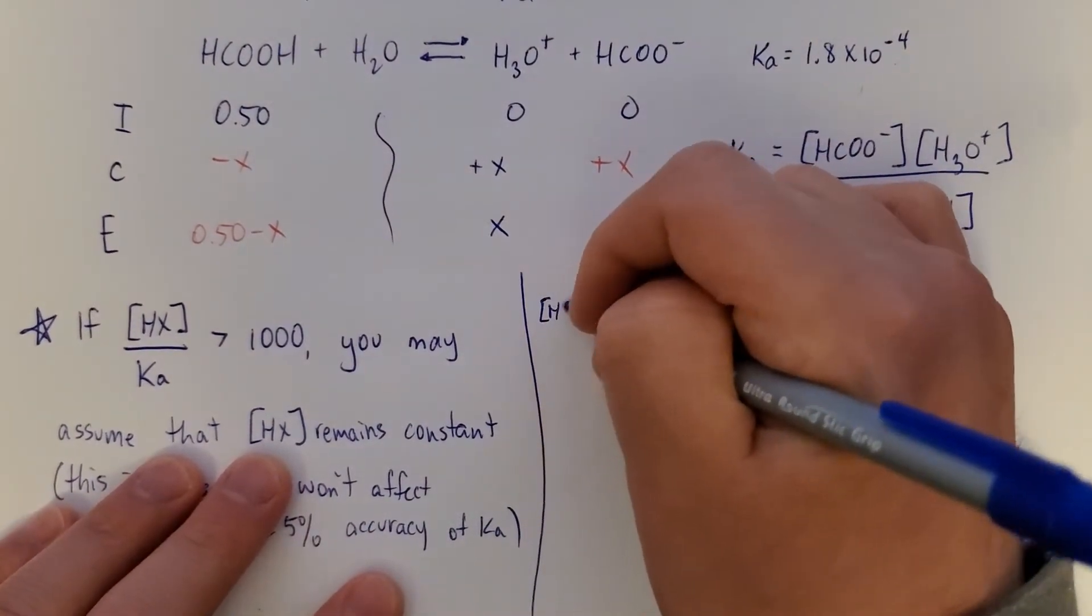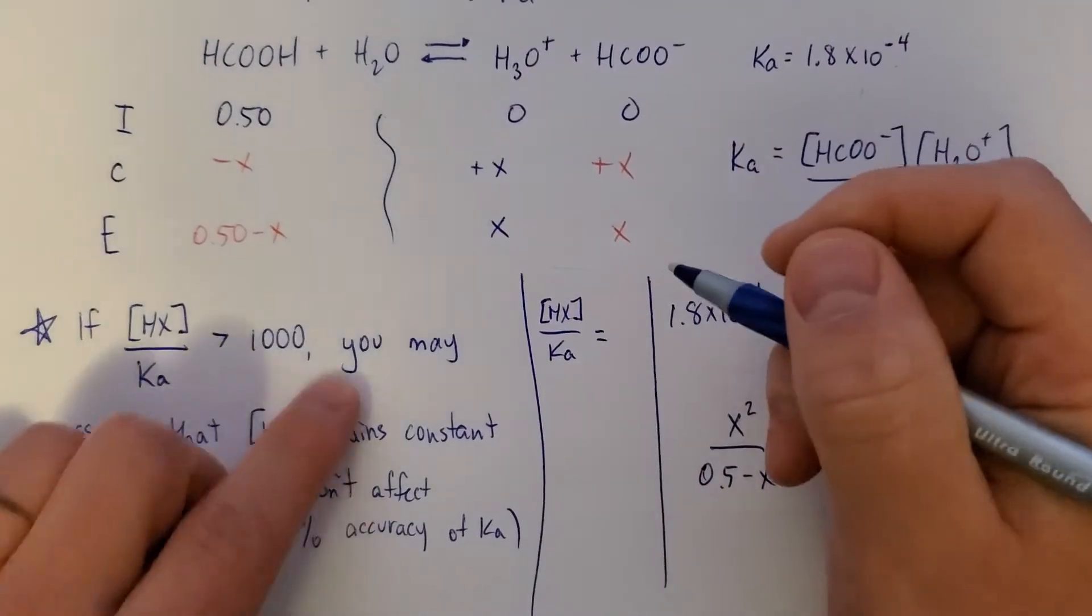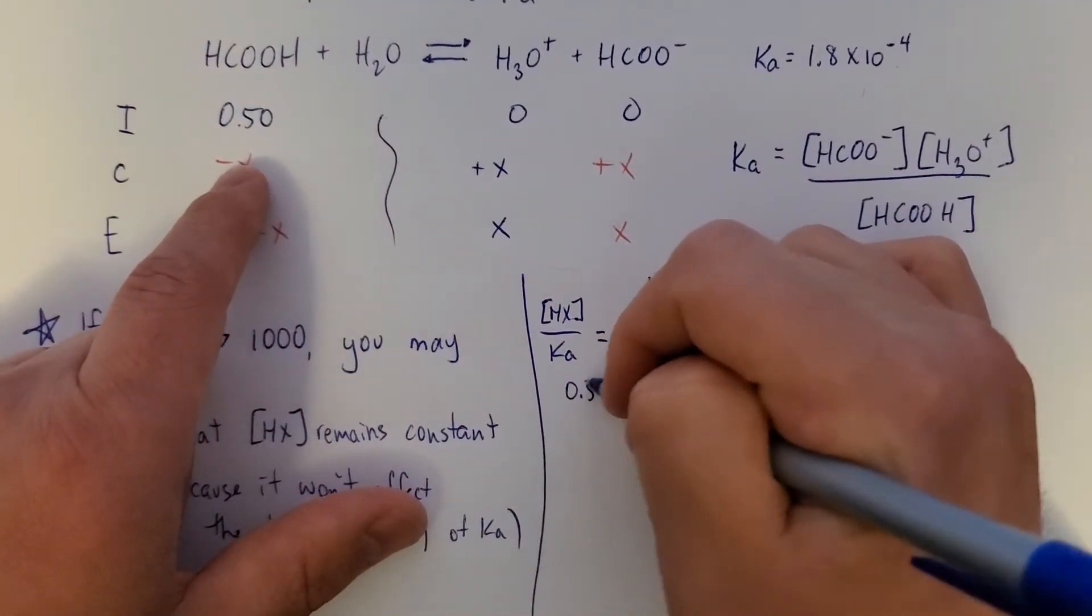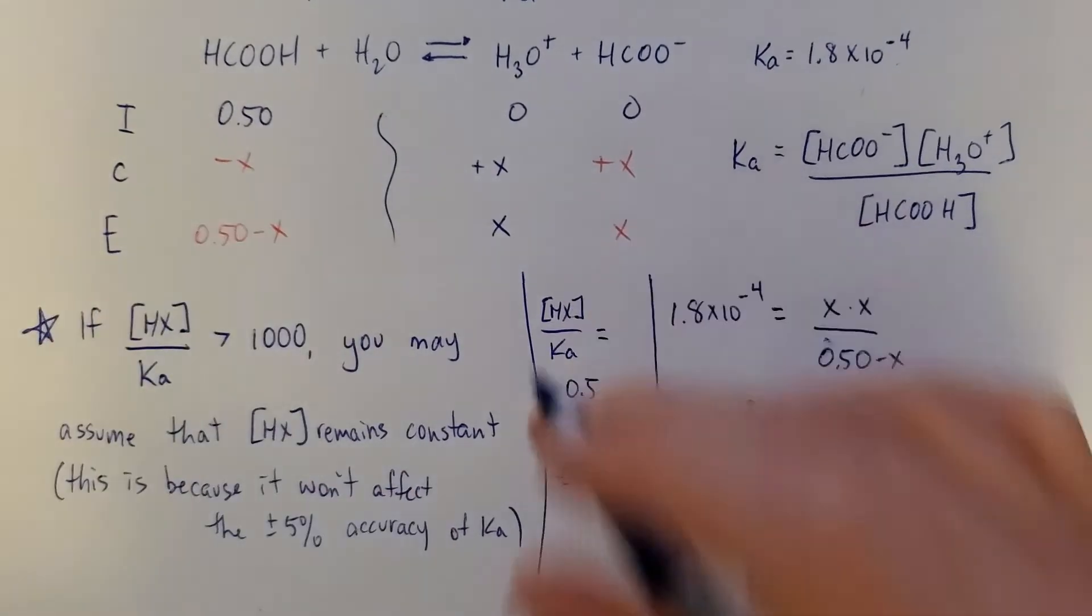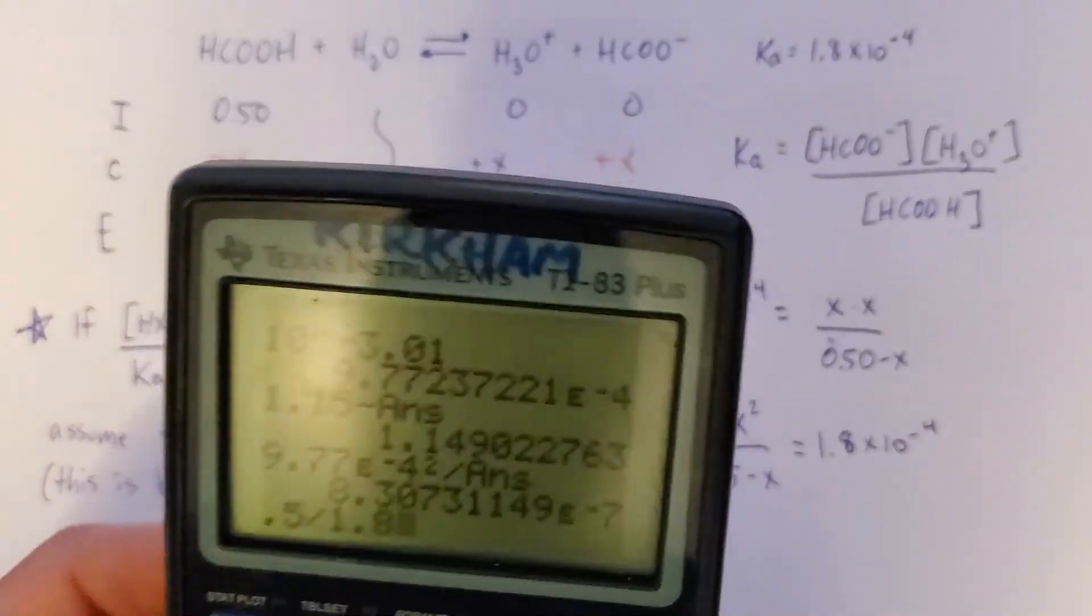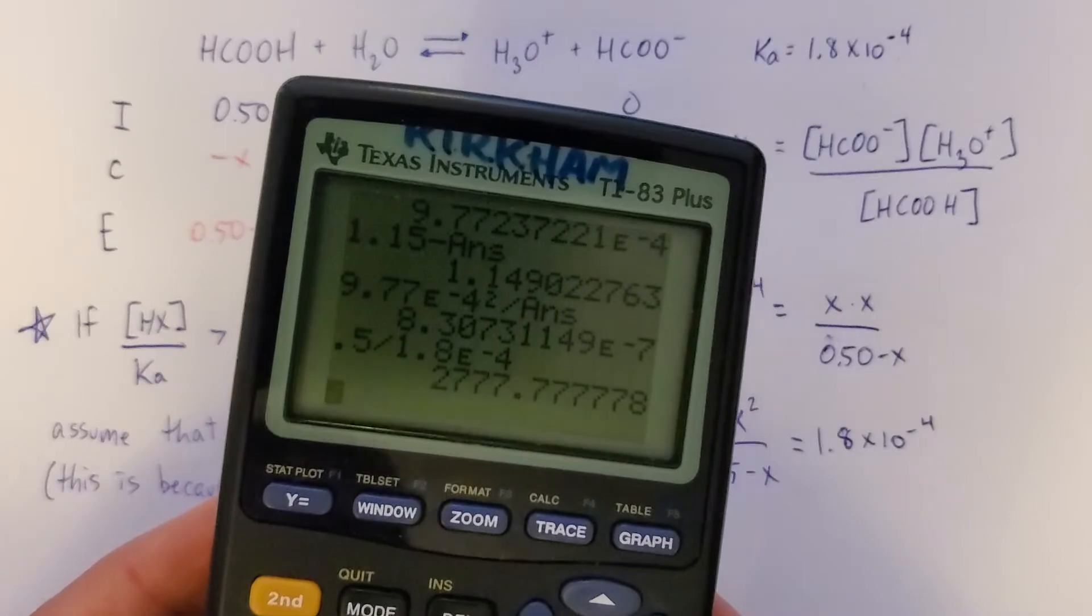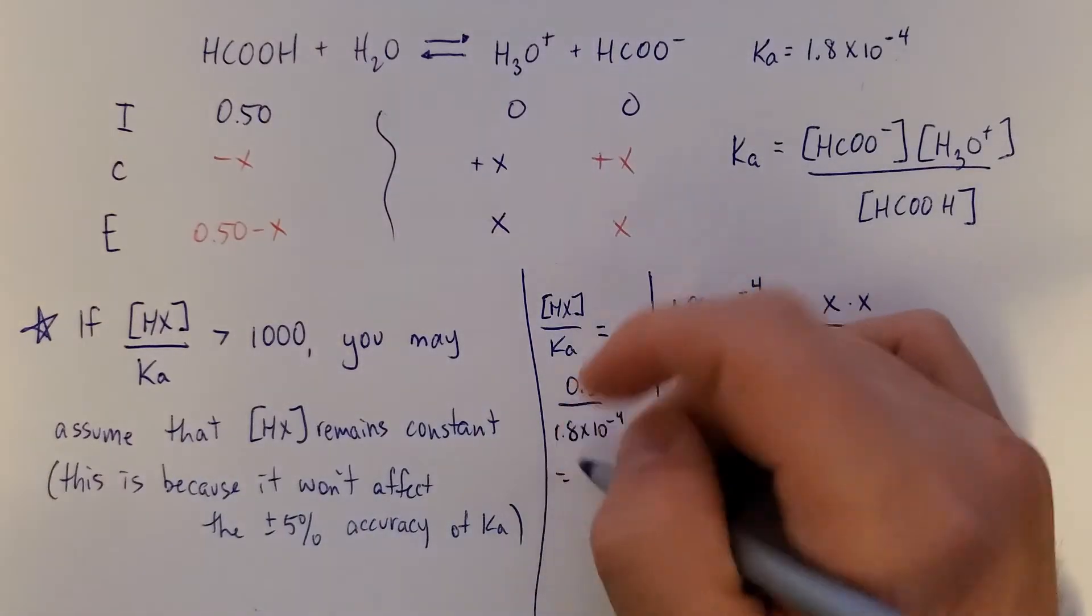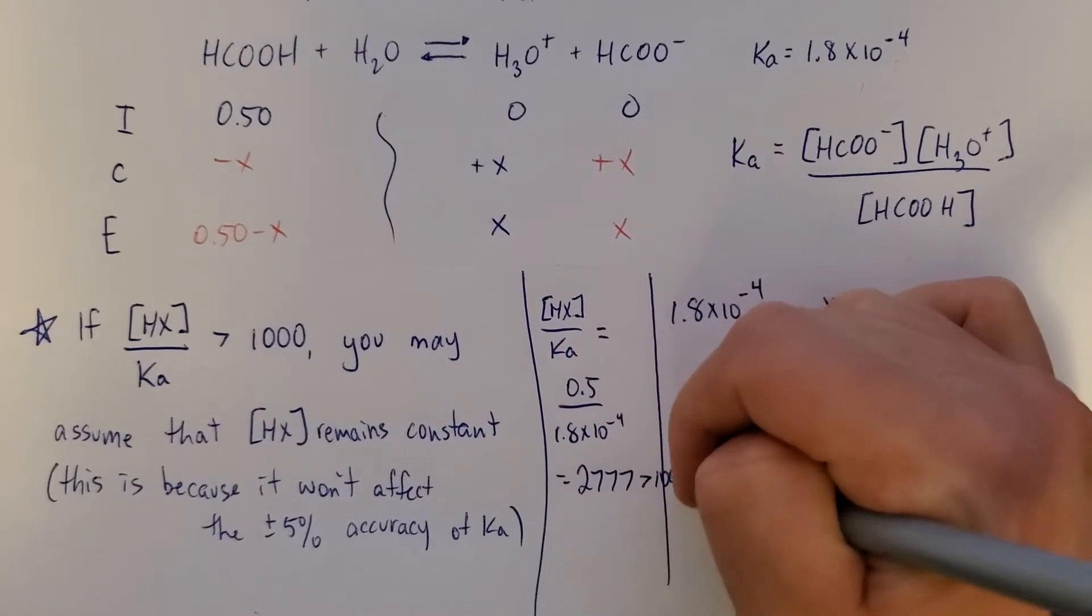So I'll write this out. So [HX] over Ka equals 0.5 divided by 1.8 times 10 to the negative 4. Check me out. 2,700 closer to 2,800. It doesn't really matter. It's greater than 1,000. So here's what you can do.